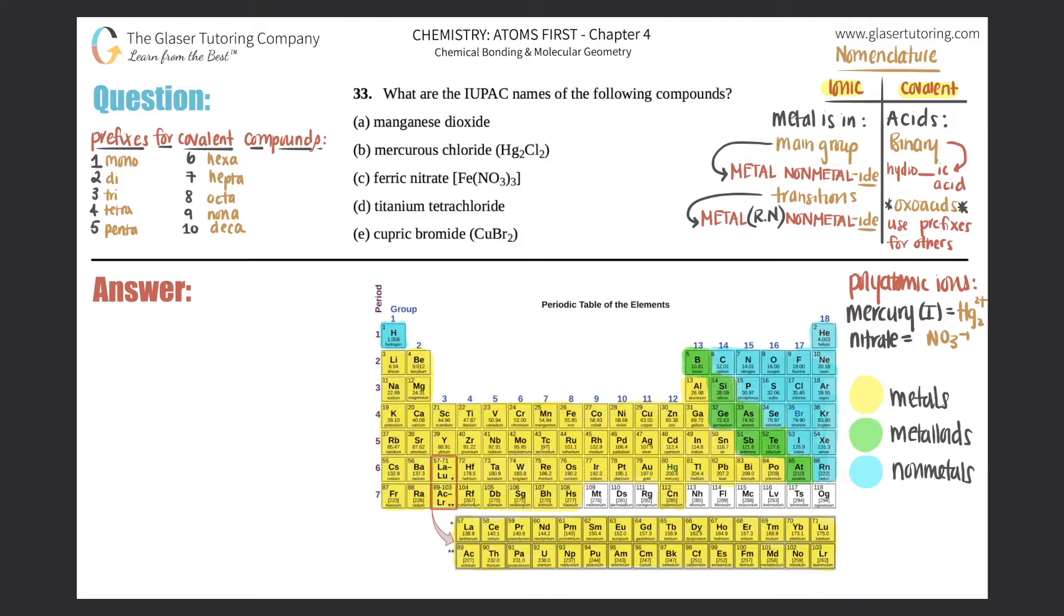Number 33. What are the IUPAC names of the following compounds? And then we have A through E.